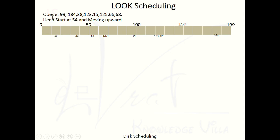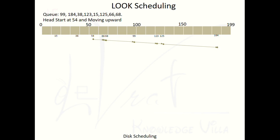Now let's look at the actual data — same as the previous example: 99, 184, 38, 123, 15, 124, 66, 68, 8 — with the head starting at 54 and moving upward. We start from 54 moving upward. The head moves up to the last request in the upward direction, which is 184. After reaching 184, the head looks whether any more requests are available from 184 to 199.